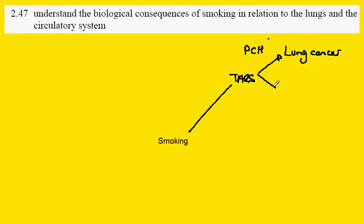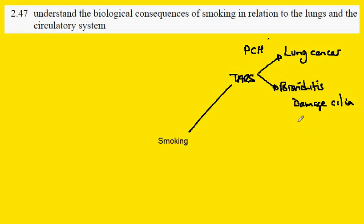Another thing which can be caused by the tars is bronchitis — specifically chronic bronchitis, long-term bronchitis. The things going on here are damage to the cilia cells, the trachea and the bronchi, inflammation, and excessive mucus production. The combination of these three things can lead to infections, and what is characteristically shown is the smoker's cough.